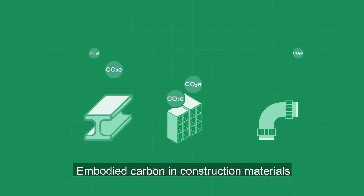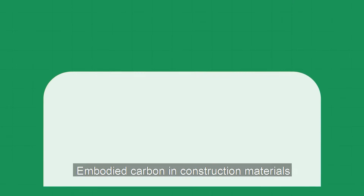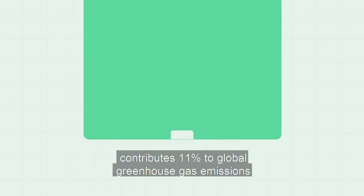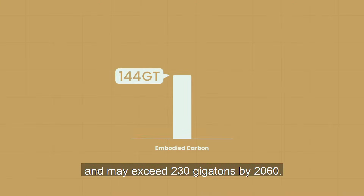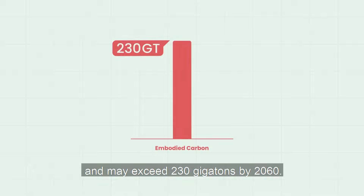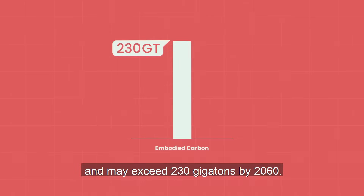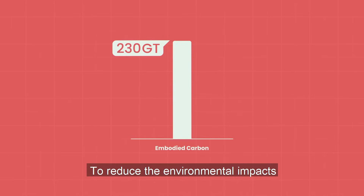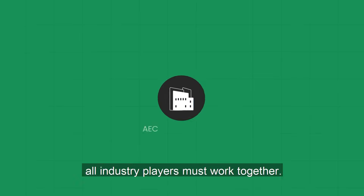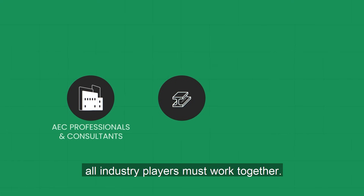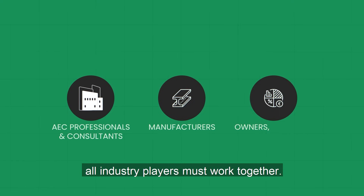Embodied carbon in construction materials contributes 11% to global greenhouse gas emissions and may exceed 230 gigatons by 2060. To reduce the environmental impacts of our built environment, all industry players must work together.